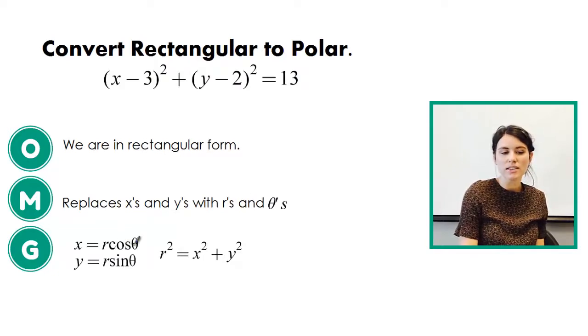So we know that x equals r cosine theta, y equals r sine theta, and that r squared equals x squared plus y squared.